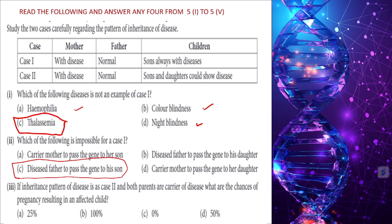If the inheritance pattern is as in Case 2 and both parents are carriers, what is the chance of an affected child? Taking both parents as Cc × Cc, the probability of getting cc (affected) is 1/4 — that is 25%.